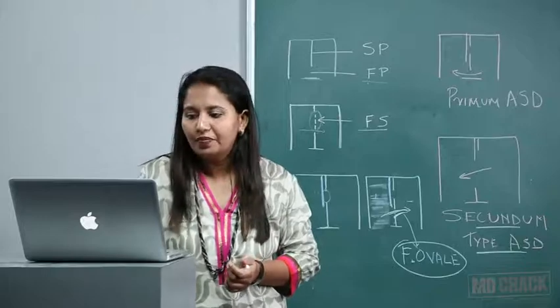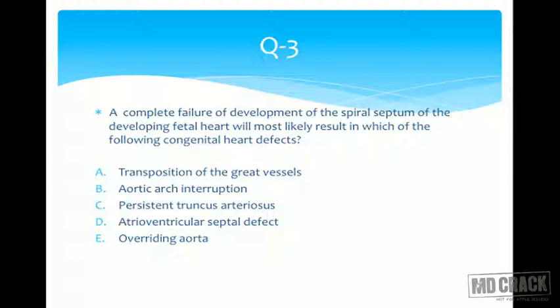Let's go to the third question. It asks about complete failure of the spiral septum in the developing fetal heart and which congenital heart defect results. Pay attention to the concept. You know the embryology of the heart — there is a septum that must meet the muscular portion of the ventricular septum. Part of the ventricular septum is membranous, part is muscular. This aorticopulmonary septum has to turn 180 degrees as it joins — that's why it's called the spiral septum.